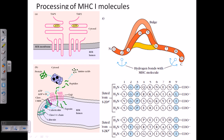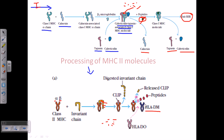The TAP complex is a channel-like structure that helps transport peptides produced by the proteasome in the cytoplasm into the ER lumen. All protein degradation occurs inside the cytoplasm via the proteasome system, so after producing small peptides, they must be carried via TAP into the ER lumen. HLA-DM helps the Class 2 MHC molecule acquire the newly processed pathogenic peptide segment, replacing the previously associated CLIP. This completes the processing of MHC Class 2 molecules.